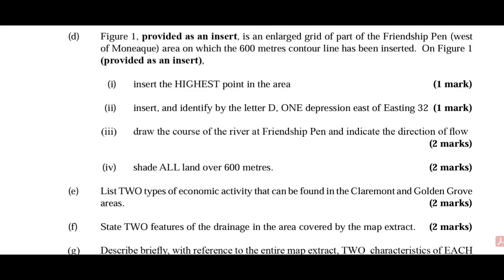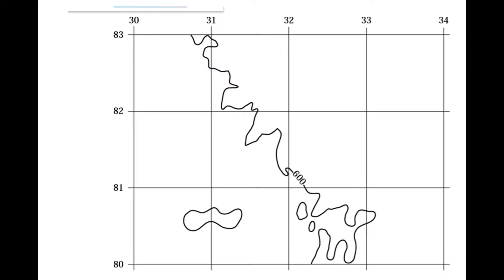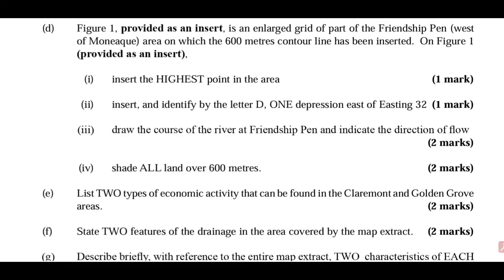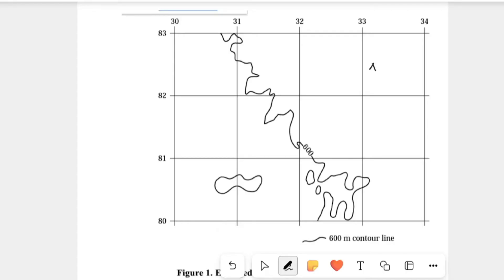Part D is based upon an insert provided here, and you have to insert these pieces of information. First, insert the highest point in the area. This is representative of the trigonometric station — that triangle at the top — which is at 795 meters. Be careful when doing this and be sure to look at it block for block.